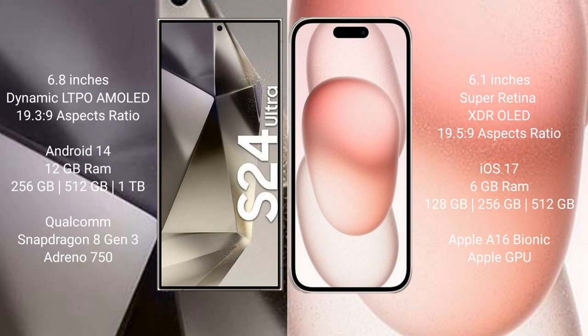Samsung Galaxy S24 Ultra comes with 12GB RAM and 256GB internal storage, with a Qualcomm Snapdragon 8 Gen 3 processor and Adreno 750 GPU.